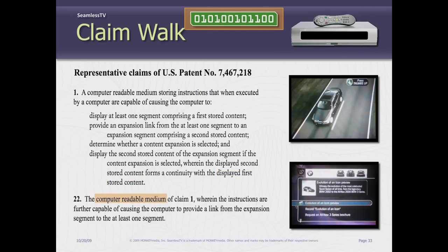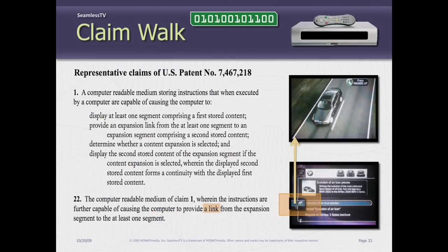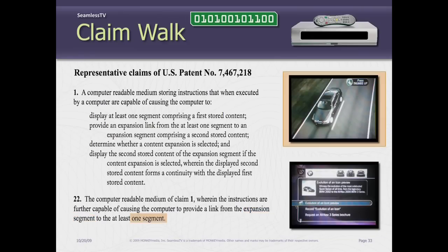And then another claim: the computer readable medium — in memory — wherein the instructions are further capable of causing the computer to provide a link back, which is the left arrow — that's how that's actuated — from the expansion segment back to the at least one segment. So that's an example of claims 1 and 22 from the 218 patent.